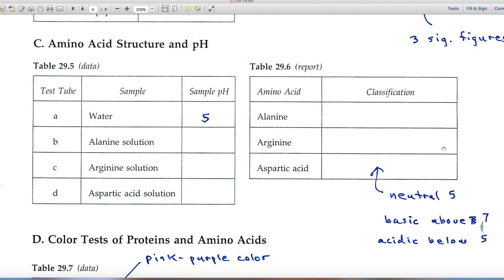Part C deals with amino acid structure and pH. And the pH of various amino acid solutions are compared to the pH of water. Even pure distilled water rarely has a pH of 7. It's because of the carbon dioxide that's in the air. It dissolves in the water, and as it does so, it forms carbonic acid. And that lowers the pH a little bit. So what you'll actually be doing is comparing the pHs of these solutions to water at pH 5.